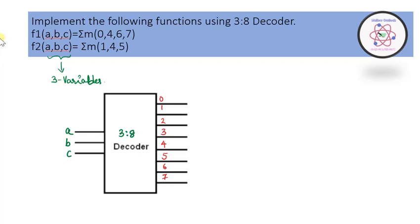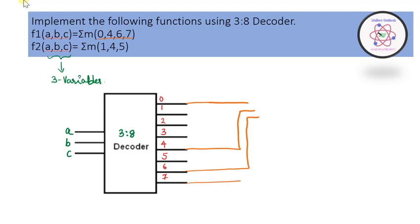Since the function consists of min term representation, we are going to form a group for function F1 corresponding to the decimal notations 0, 4, 6, and 7, and combine them using the OR gate.